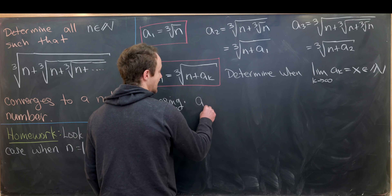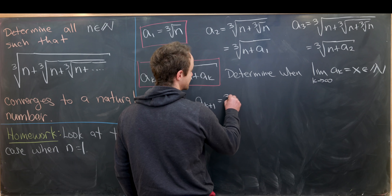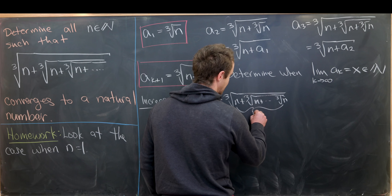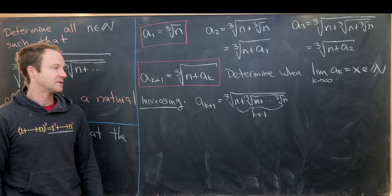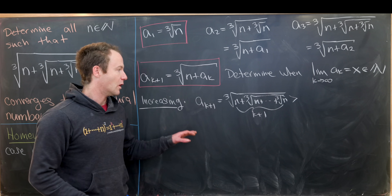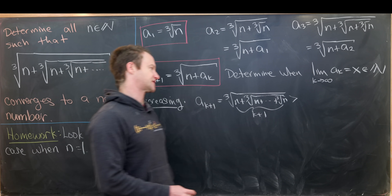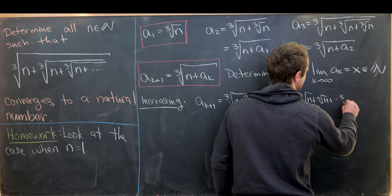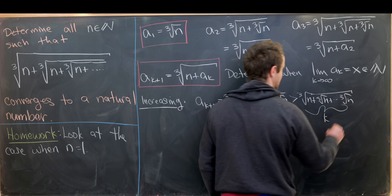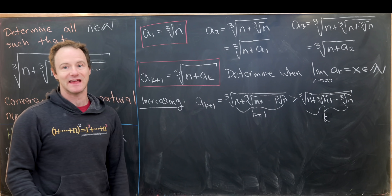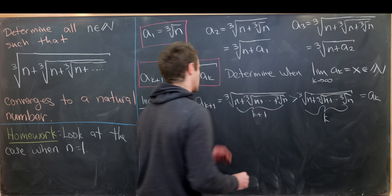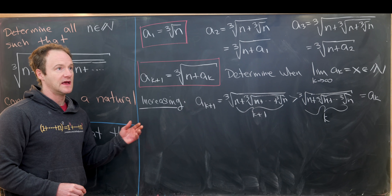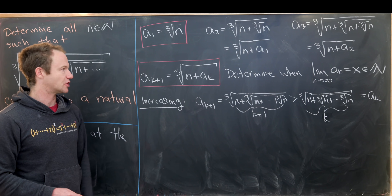The sequence is pretty clearly increasing. Notice aₖ₊₁ equals the cube root of n plus the cube root of n all the way down, occurring k+1 times. That's strictly bigger than what we get if we remove the last occurrence — which leaves us with k nested cube roots of n, and that's exactly aₖ. So we've proven monotonicity: aₖ₊₁ > aₖ, meaning a₂ > a₁, a₃ > a₂, and so on.